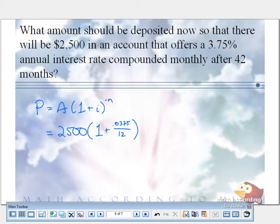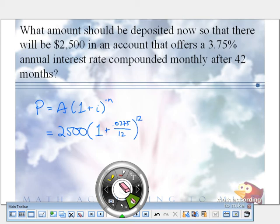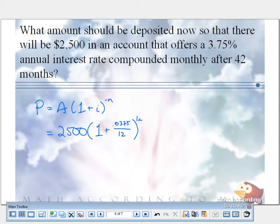Raise to the, be careful. The exponent is the number of payment periods per year times the number of years. How many payment periods do we have per year? 12, because it's monthly. Excuse me. I made a small error there. What did I forget? My negative. Don't forget your negative. So negative 12 times how many years? 3.5.